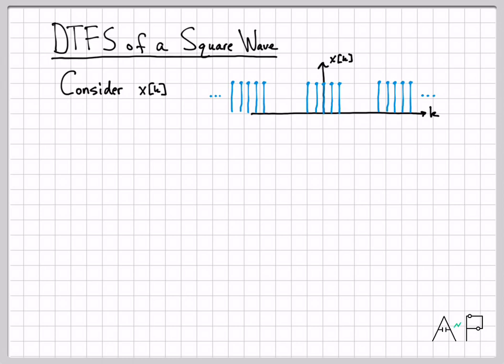This discrete time signal x of k is a periodic square wave that is on for a total of 2m plus 1 samples. Its total width goes from minus m to m, but then it repeats every n-naught samples. There's a cluster here, then at n-naught there's the next cluster, and down at minus n-naught there's the next cluster, periodic for all time. That's the signal we're going to be dealing with.